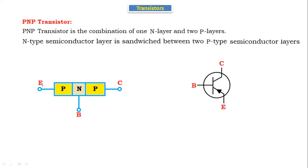The PNP transistor has three terminals: this terminal is the emitter terminal, this is the base terminal, and this is the collector terminal. In the PNP transistor, the emitter current direction is inside, whereas in the NPN transistor, the emitter current direction is outside.